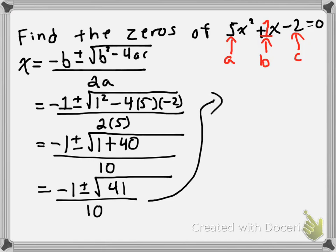What we have here is the exact answer to this particular question. We could write it in a slightly different way, but this is the exact form because, since this does have a radical in it, you can express it in exact form or approximate form. So, if we do negative 1 plus the square root of 41 divided by 10, that gives us approximately 0.54. And if we do negative 1 minus the square root of 41 divided by 10, that gives us approximately negative 0.74. So, those are the solutions to this quadratic equation, and that's how to solve a quadratic equation using the quadratic formula.